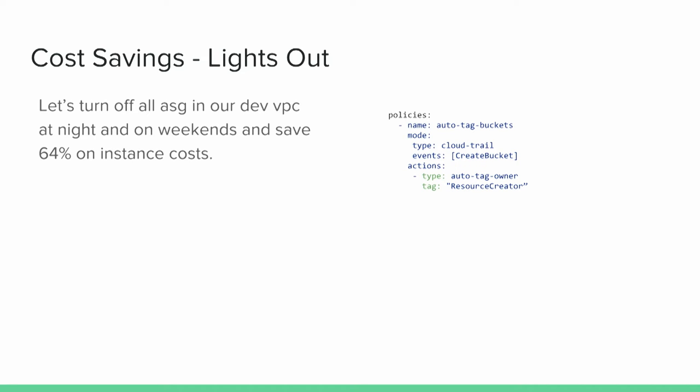Let's look at some sample policies. There's actually a sample in our docs for doing the off-hours stuff — you can save a lot of money just by turning off your instances at night or just doing it on the weekends. We support doing that for both EC2 instances and autoscale groups, and our docs have examples for that.